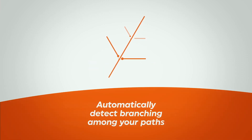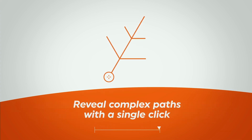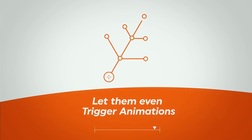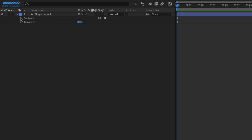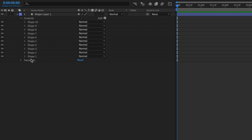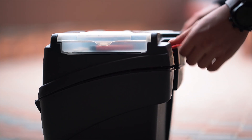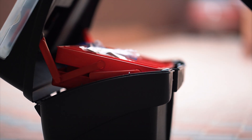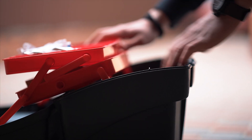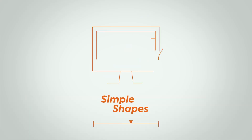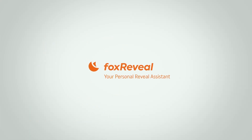The way this script works is very interesting. It automatically detects paths with a special branching algorithm, and with one easy click you can have all paths animated. There is no reason to go through layers, add trim paths, and animate each one individually. If you are trying to build a script toolbox, this is a great one to throw in there. This script is a prime example of how to work smarter and not harder in After Effects.